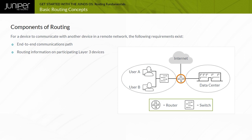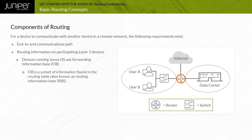The gateway device must determine the proper next hop for each destination prefix for transit traffic it receives. Devices running Junos OS use the forwarding table, also known as forwarding information base, or FIB, which is a subset of information found in the routing table, also known as routing information base, or RIB, to make this determination.